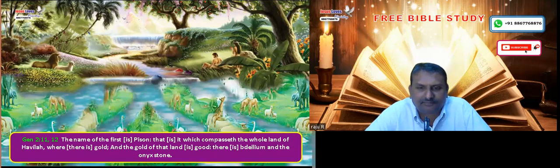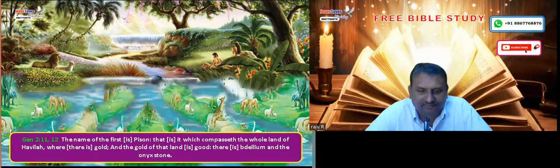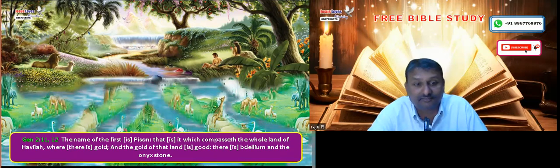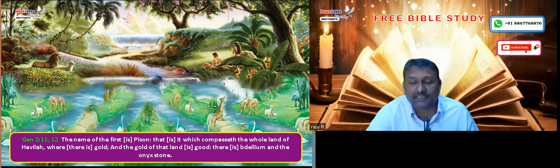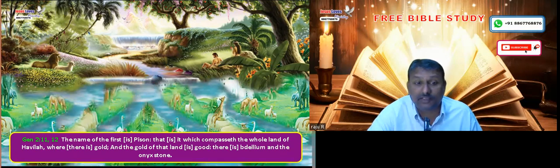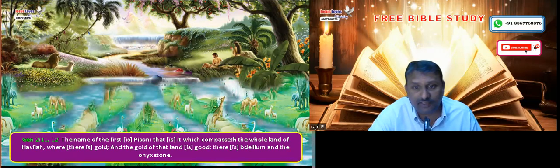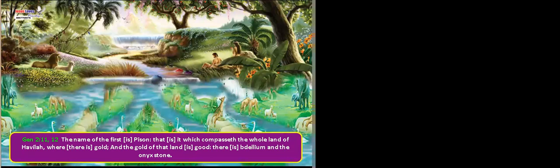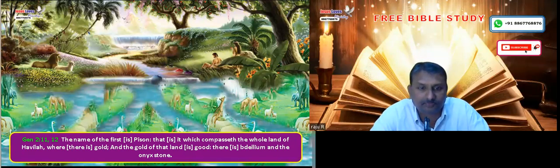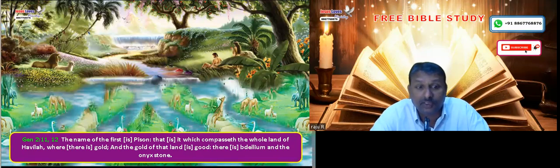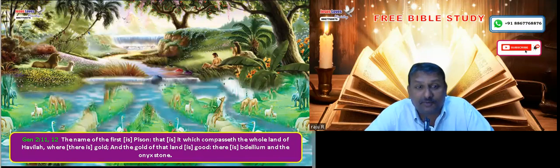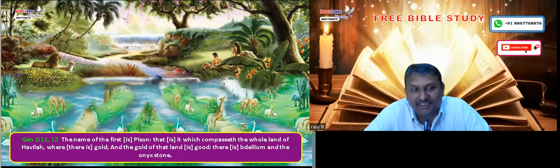The name of the first is Pishon, that is it which compasses the whole land of Havilah, where there is gold. The first river is called Pishon, it covers the whole land of Havilah, and there is much gold there. And the gold of that land is good; there is bdellium and the onyx stone.